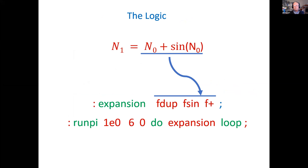So here's how we calculate it. For each iteration, n1 equals n0 plus the sine of n0. Well, that looks pretty simple. So in the Forth term expansion, all we had to do is a floating point duplicate, a floating point sine, add the two together. We put that into a wrapper. The wrapper is run pi. 1e0 is the floating point one. We'll iterate six times through the expansion and loop.